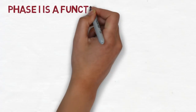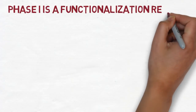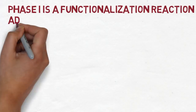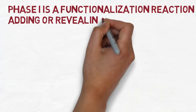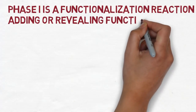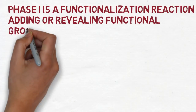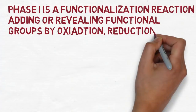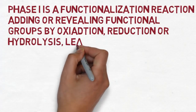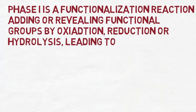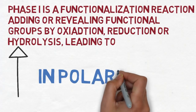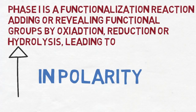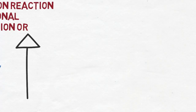Phase 1 metabolism is characterized as a functionalization reaction, where they add or reveal a functional group by oxidation, reduction, or hydrolysis, leading to an increase in overall polarity of the drug, which facilitates its excretion in the urine.